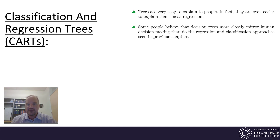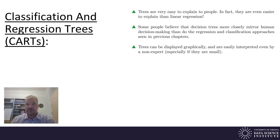Some people believe that decision trees more closely mirror human decision-making than do regression and classification approaches seen in previous chapters. Trees can be displayed graphically and are easily interpreted, even by the non-expert, especially if the trees are small.